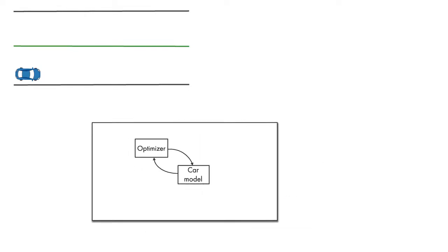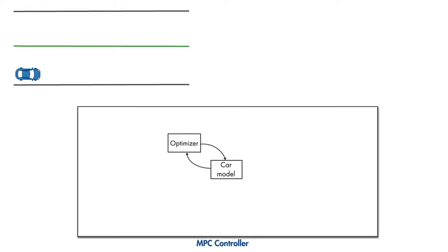We'll first focus on how the controller uses the car model, and later we'll discuss the optimizer. Let's use this plot to show the lateral position of the car. The vertical axis reflects the current time. Anything behind it reflects the past, and values to the right of it show the future.